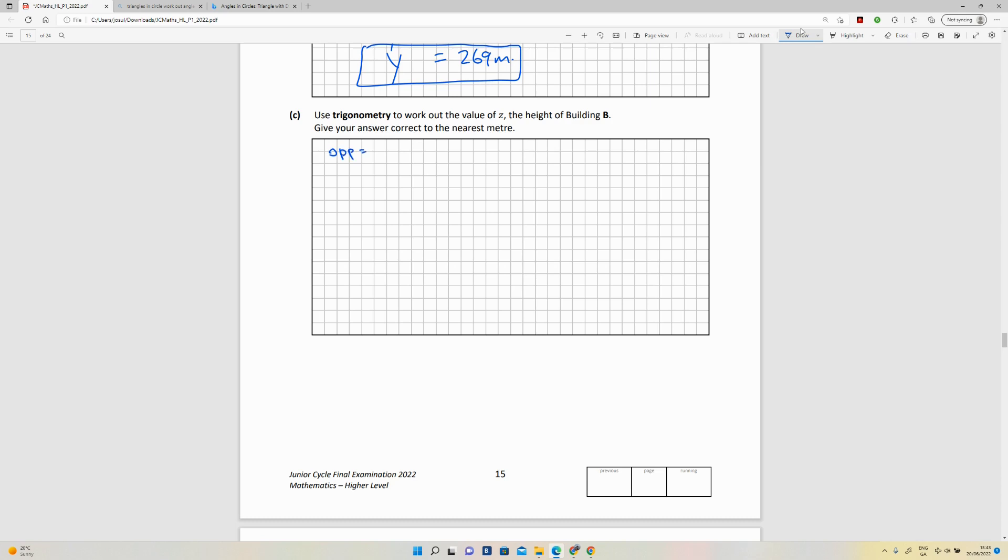So the opposite is equal to z1, the adjacent is equal to 154. So if I go opposite over adjacent, and I know my angle, I can do a tan function on the angle to work out what the opposite is. So the tan of 20 degrees equals z1 all over 154.